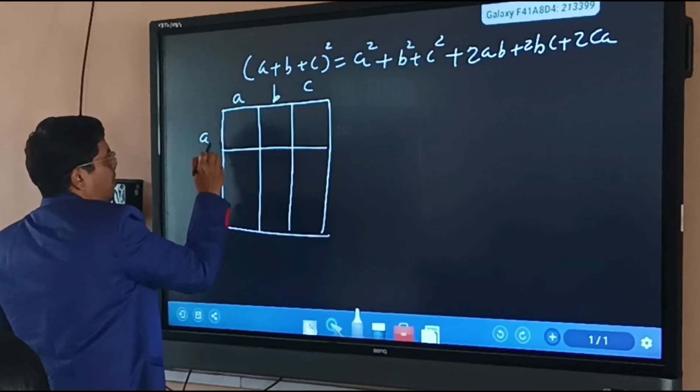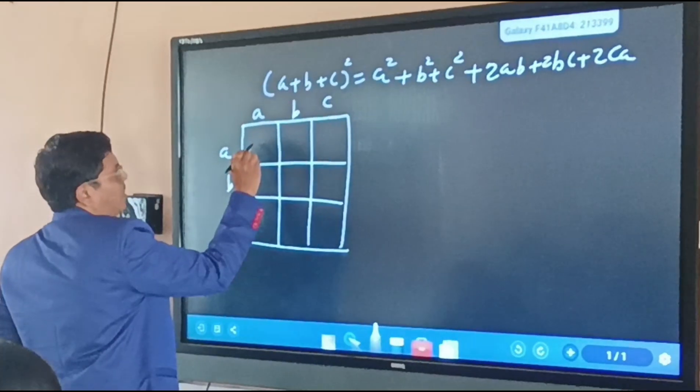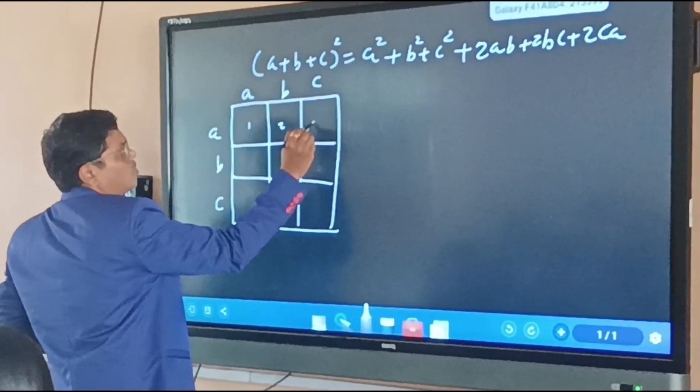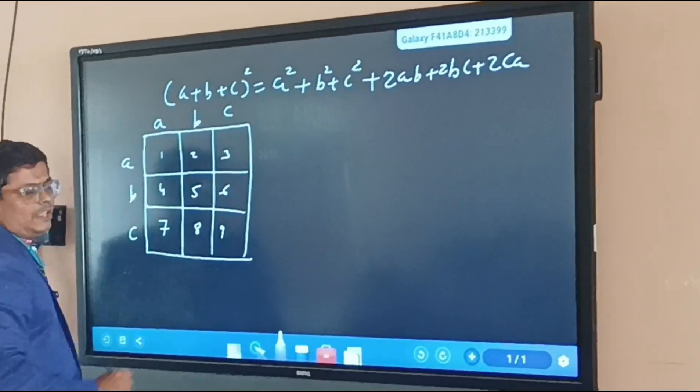Again we will divide into other parts like a, b, and the last one is c. So we have nine parts as one, two, three, four, five, six, seven, eight, and nine.